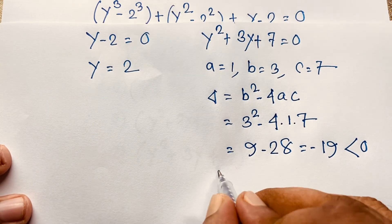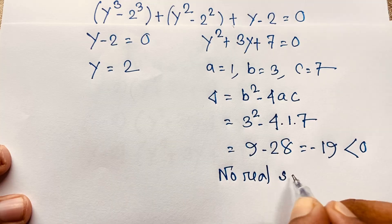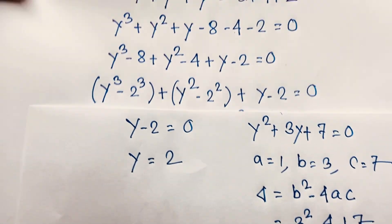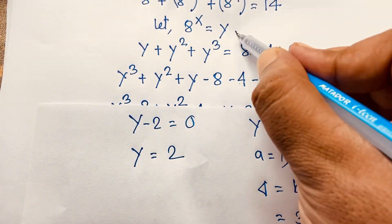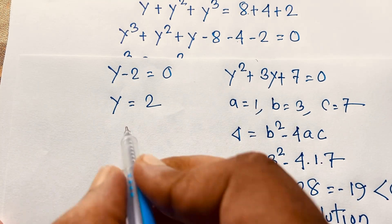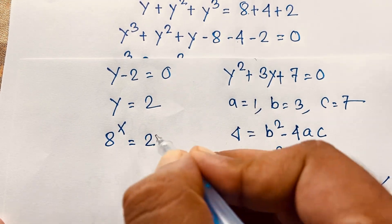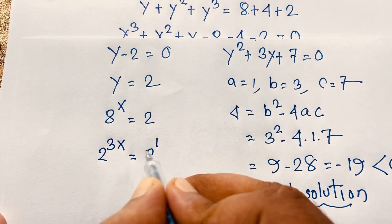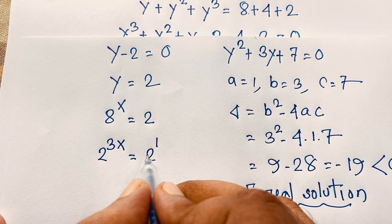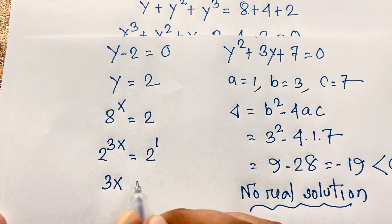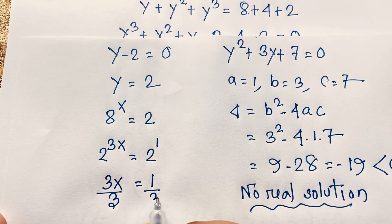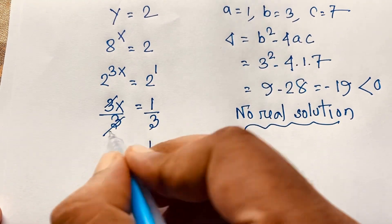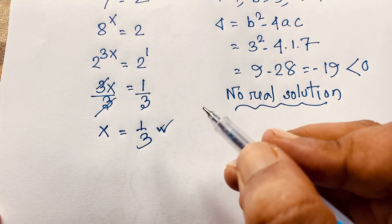Since delta = -19 < 0, Case 2 gives a complex number — no real solution. So y = 2 is the only real answer. Recalling y = 8^x, we have 8^x = 2. Writing 8 as 2³: 2^(3x) = 2^1, so the exponents are equal and 3x = 1. Dividing both sides by 3: x = 1/3.